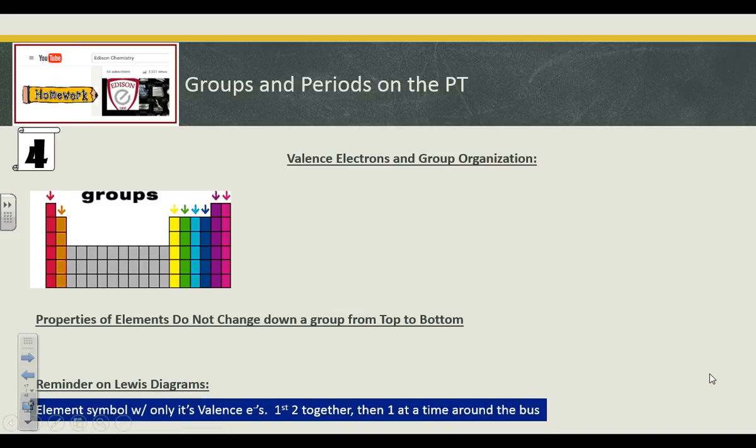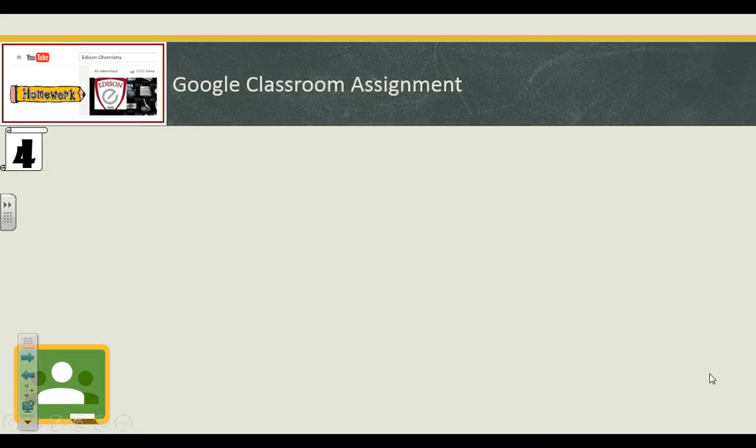When you are writing Lewis diagrams, remember, only the valence electrons are drawn. The first two electrons go together, and then we put one around at a time until you have a full electron shell of eight maximum. Essentially, Lewis diagrams are trying to remind us of the fact that an element belongs in a specific group, and that group has specific properties related to that number of dots of electrons that are around.